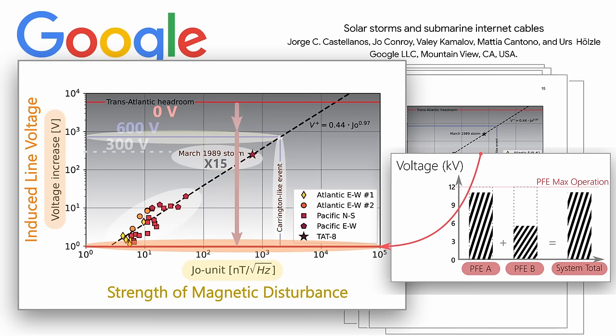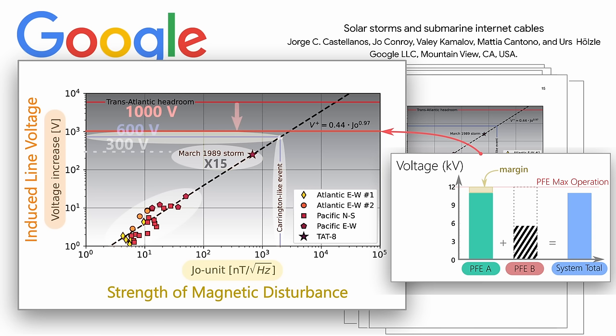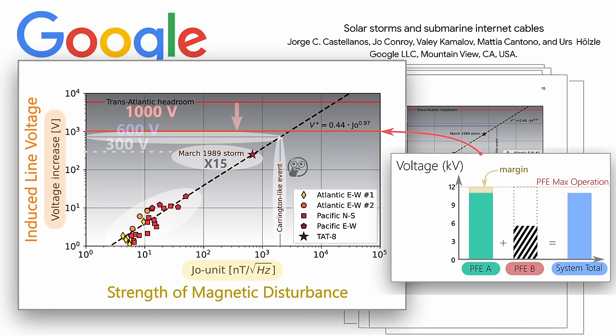So if the headroom goes down to 1,000 volts in the case of a PFE failure, you may think, well, this still clears the Carrington-like event, as labeled by their chart. But the placement of the Carrington-like event is only a guess. Its placement on the chart at around 600 volts only assumes it would induce a voltage twice as large as the March 1989 storm. Now, there are many studies that attempt to simulate the voltage inductions from a Carrington-like event, and the answers remain speculative at best. But even the data on this chart may provide some clues.